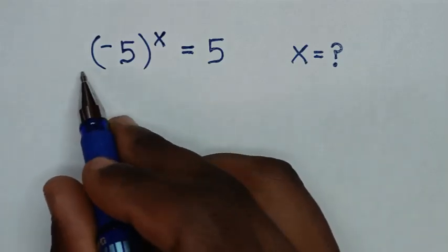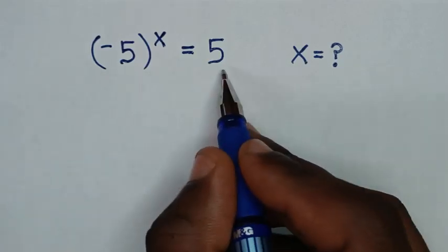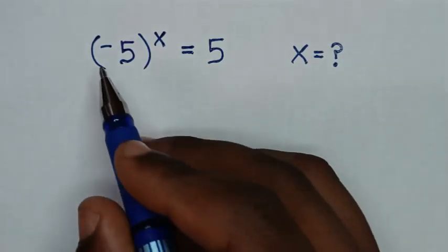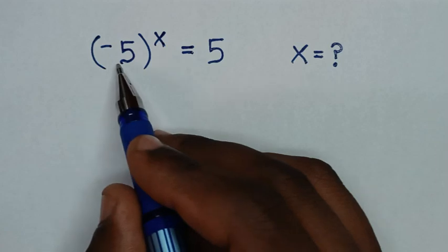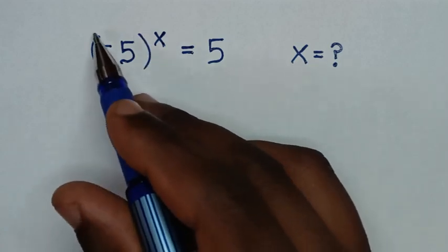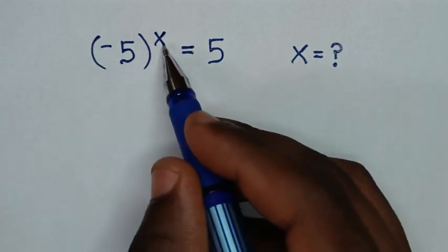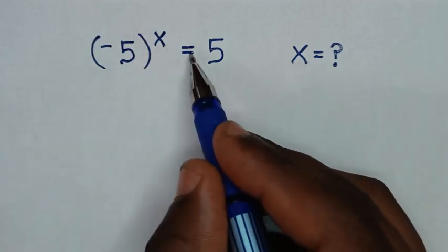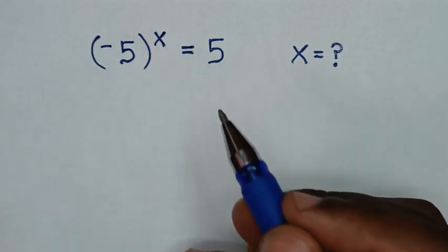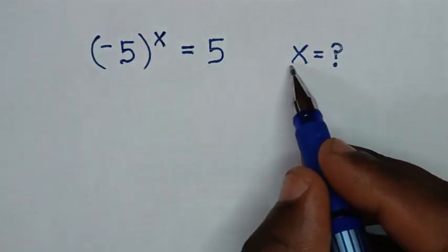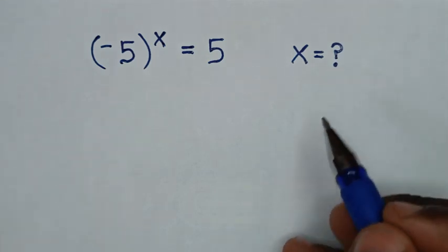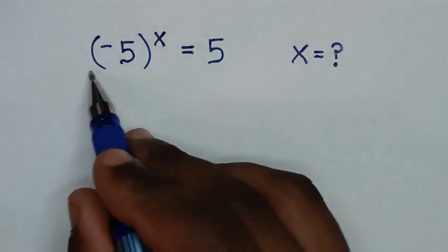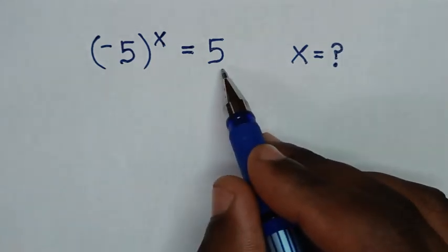You are welcome to solve this math problem: negative 5, in brackets, raised to power x, is equal to 5. Find the value of x from this equation.